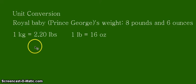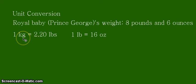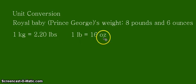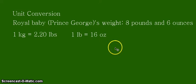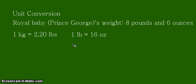I have now written the equivalent statements that we need, which will be transformed into conversion factors. We have 1 kilogram (kg) is equal to 2.20 pounds — LBS is the abbreviation for pounds. Another equivalent statement is 1 pound (LB) is equal to 16 ounces, with OZ as its abbreviation. We will be using these 2 equivalent statements and transform them into conversion factors to solve the problem.